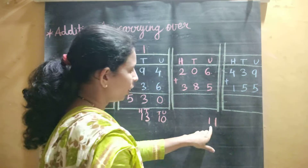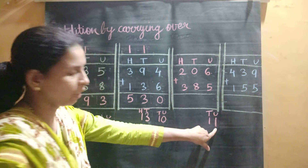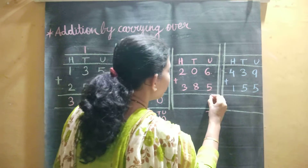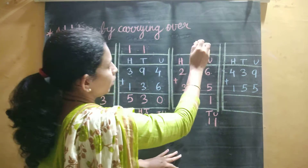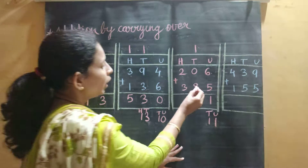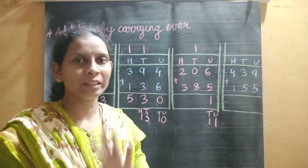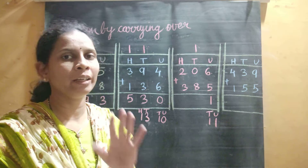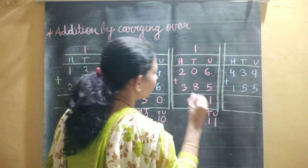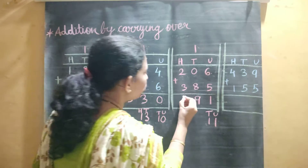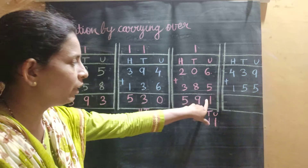6 plus 5 is 11. 11 means 1 unit and 1 ten. So we will write 1 here at the unit place and carry over 1 ten to the tens place. Then 8 plus 0 is 8 only — because if we add 0 to any number, we get the number itself. So 8 plus 0 is 8, and 8 plus 1 is 9. Then 3 plus 2 is 5. So the answer is 591.